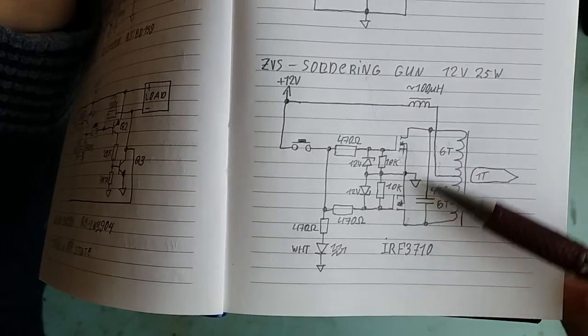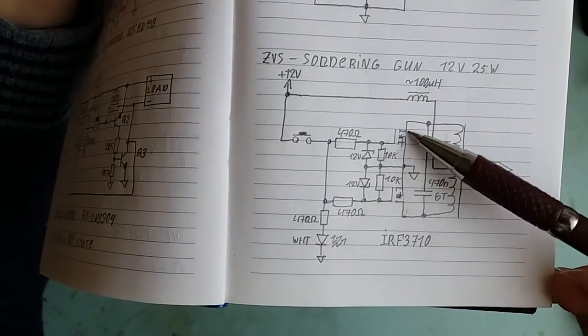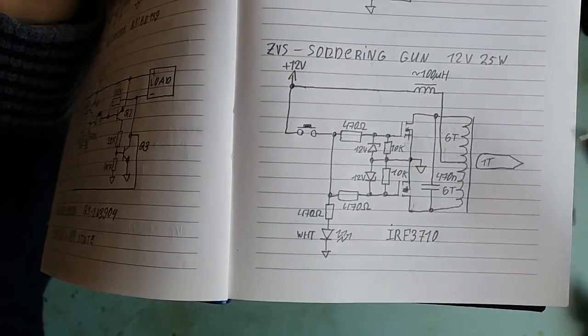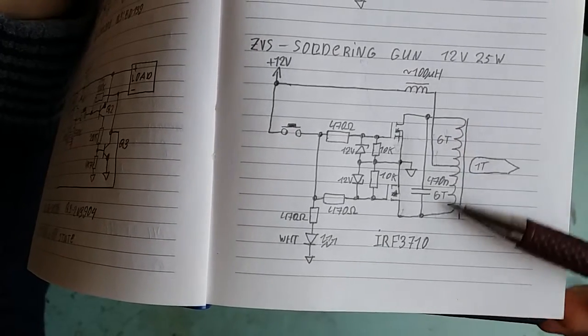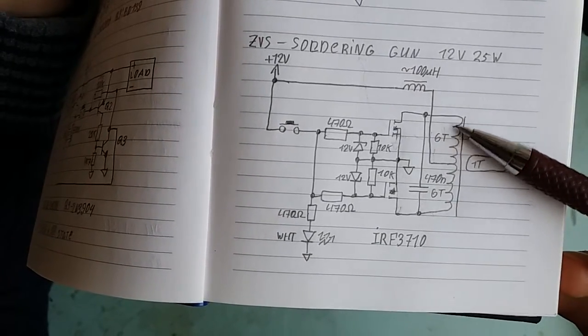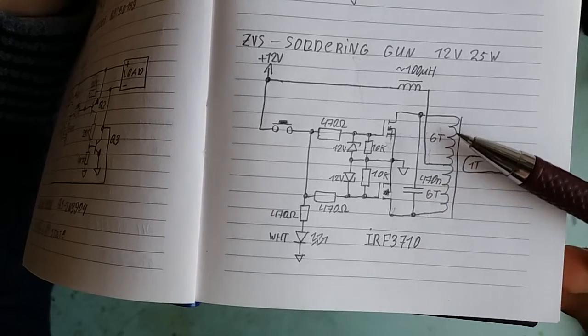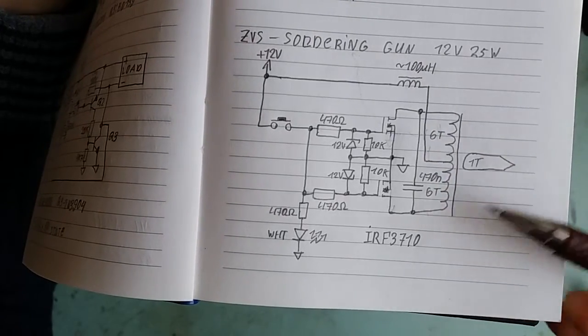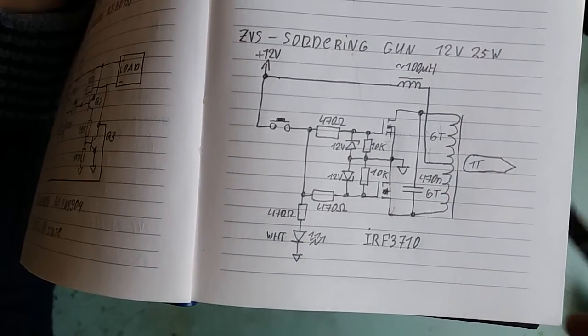That's the schematic for it. As you can see, it's a regular ZVS arrangement. The primary is 12 turns center-tapped, consisting of three wires in parallel—those wires are 0.6 millimeters in diameter.